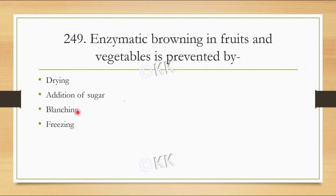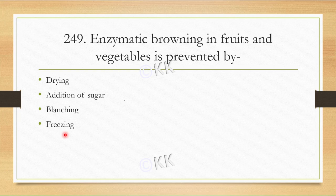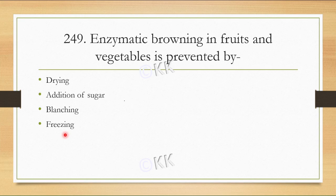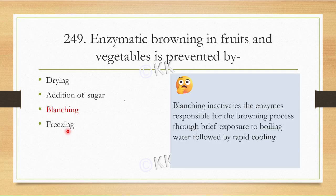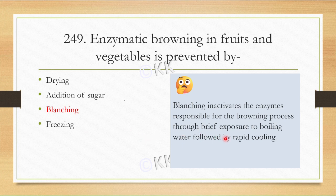Next question: Enzymatic browning in fruits and vegetables is prevented by: option A drying, option B addition of sugar, option C blanching, option D freezing. We have discussed blanching, drying, and freezing before. The answer is option C, blanching. In the blanching process, fruit and vegetable enzymes are inactivated and preserved.